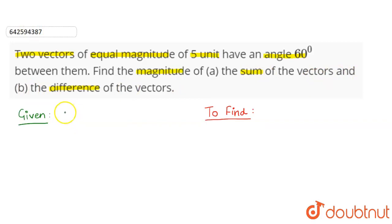So we are given two vectors of equal magnitude. Let's say vector A equals vector B equals 5, and the angle between them is given as 60 degrees. And what do we need to find? We need to find resultant of their sum and resultant of their difference.